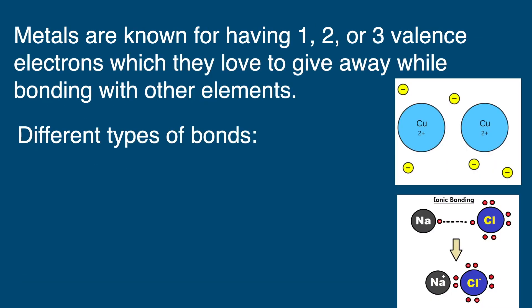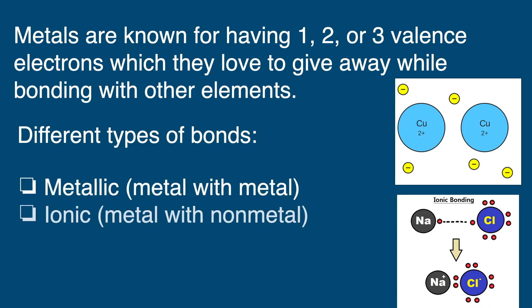Metals are known for having one, two, or three valence electrons which they love to give away while bonding with other elements. And the different types of bonds that metals can make are metallic, which is metal with metal, and ionic, metal with non-metal.